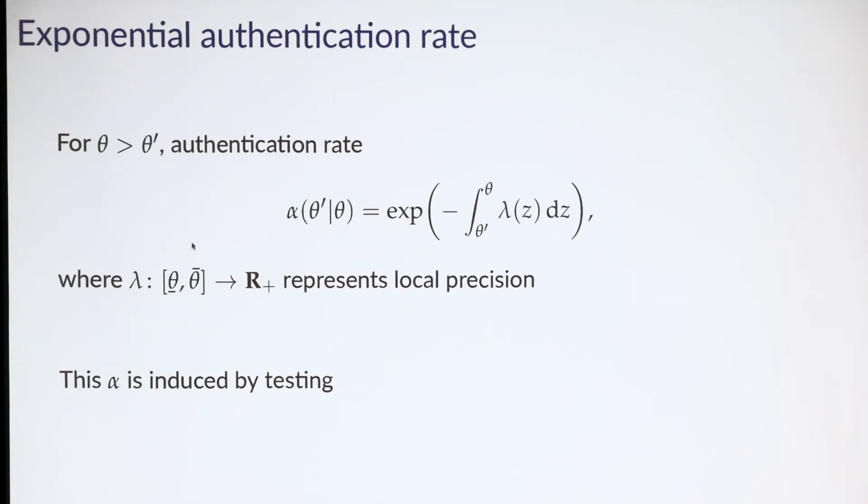We add to the standard setting an authentication rate. To keep the equation simple, I'm working with an exponential authentication rate, but the results hold more generally. If a high type theta claims to be a lower type theta prime, then he's only authenticated with this probability that starts at 1 if he's truthful and then decays exponentially as a function of the magnitude of his lie. The larger lambda is, the more precise the verification technology, and the more rapidly the authentication rate decays. This is one of those special alphas that can be induced by a most discerning testing function.